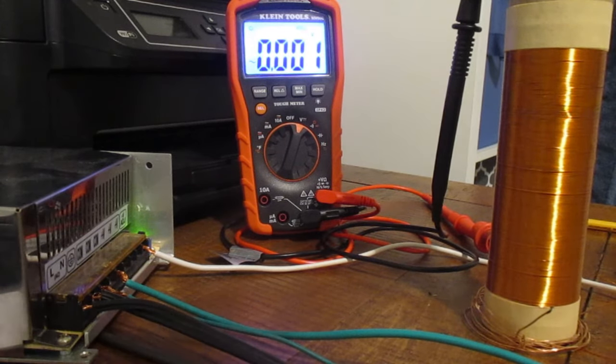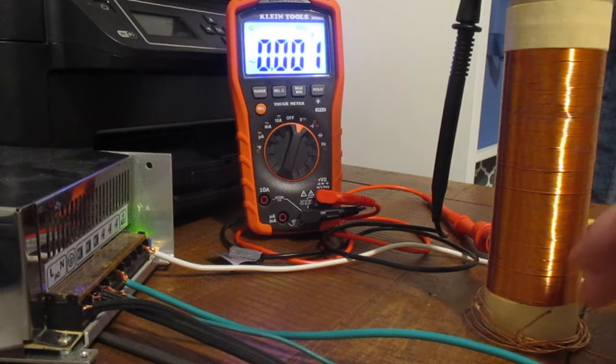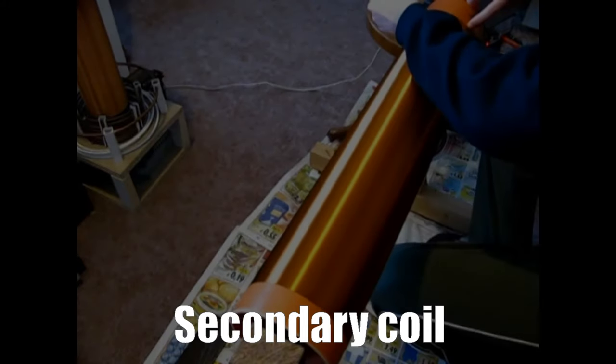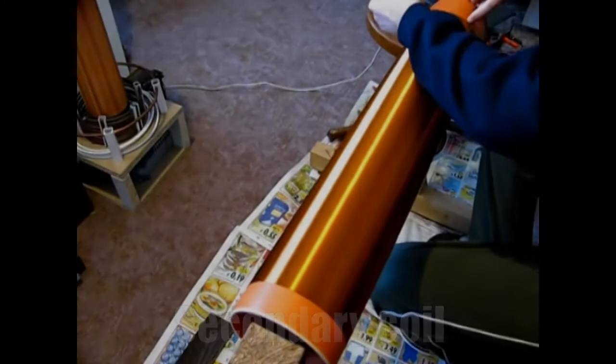It is now finally time to put those two coils we've talked so much about into our circuit. The larger coil, formally called the secondary coil, is made by wrapping magnet wire around a cylindrical form such as a PVC pipe.